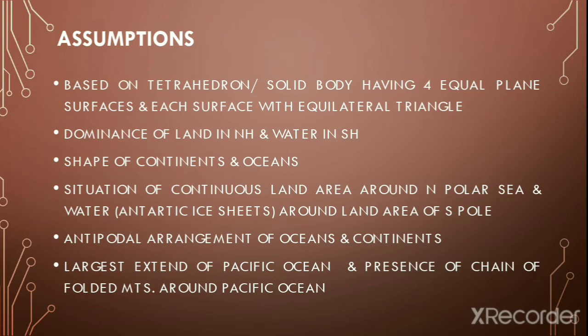Green's assumptions include: the dominance of land area in the northern hemisphere and water in the southern hemisphere; the triangular shape arrangement of oceans and continents; the situation of continuous land area around the north polar sea and water around the land area of the south pole — where the water is considered as the Antarctic ice sheet. There also exists an antipodal arrangement of oceans and continents, the largest extent of the Pacific Ocean covering one third of the earth, and the presence of fold mountains around the Pacific Ocean.